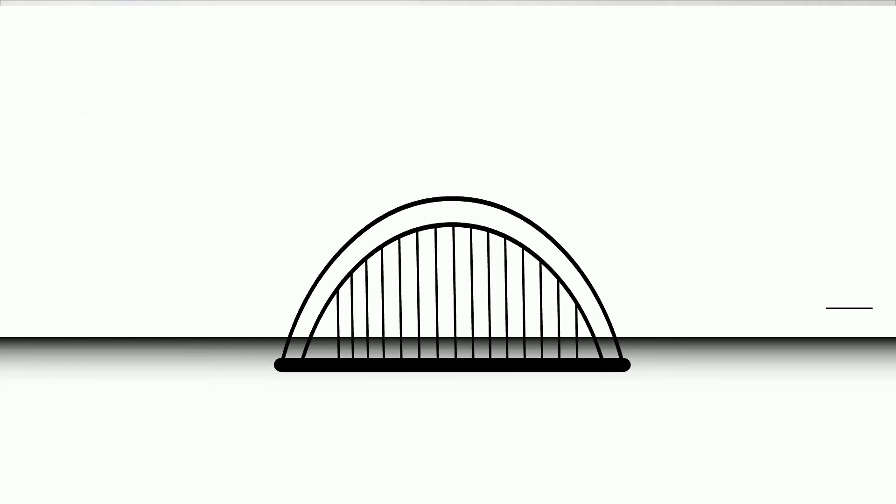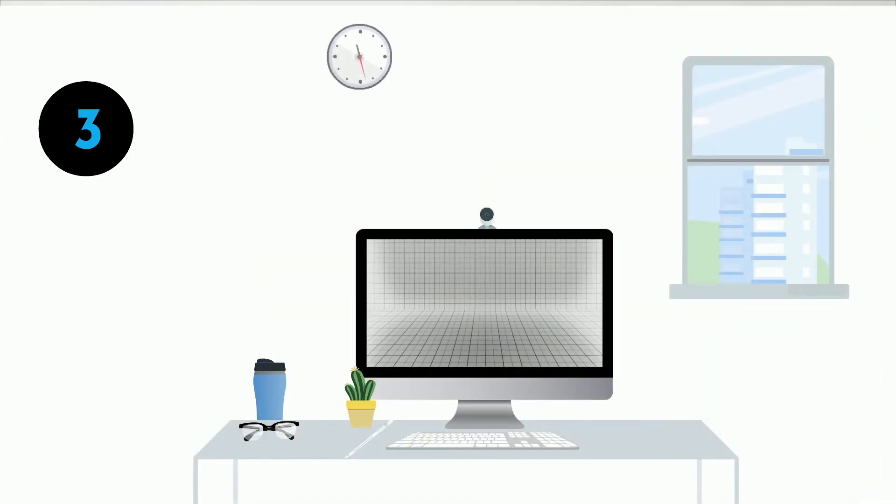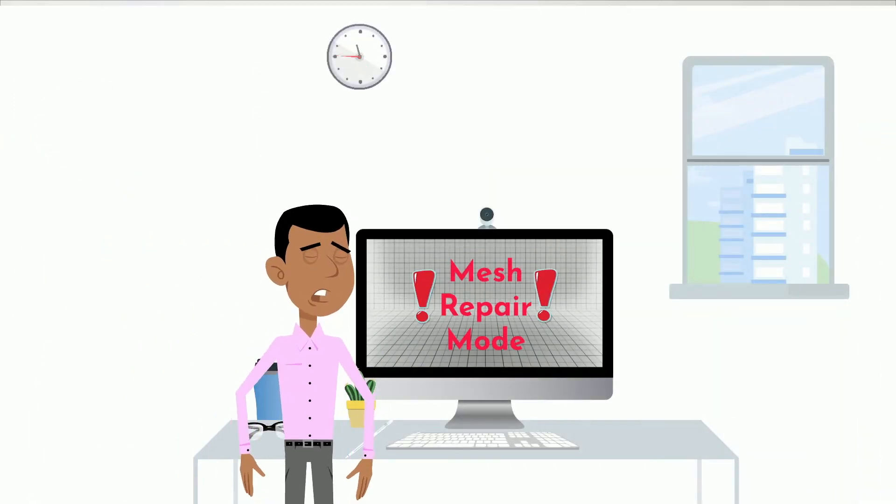The next benefit is on the manufacturing side — when users orient their geometries and create support structures, those support structures are also contained in the 3MF file, which really reduces the complexity of managing different file formats. And finally, going back to the import workflows: STLs are notorious for being bad, and we see a lot of users spending time repairing those bad STLs. We don't have those same problems with 3MF. A lot of work went into creating the format to make sure all information is captured accurately, and our users are definitely seeing the benefit.